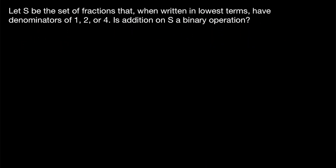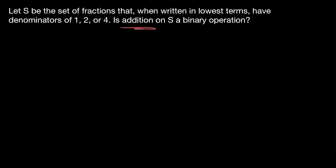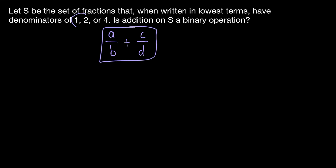Last example: let S be the set of fractions that, when written in lowest terms, have denominators of 1, 2, or 4. Is addition on S a binary operation? We know addition is a function, so we just ask: is addition closed on S? If we add two fractions a/b and c/d, where both fractions in lowest terms have denominators of 1, 2, or 4, will their sum also have a denominator of 1, 2, or 4 when written in lowest terms? The answer is yes.